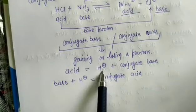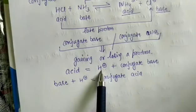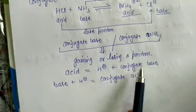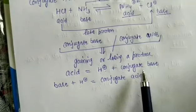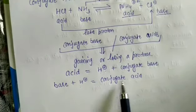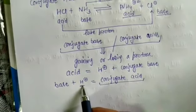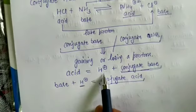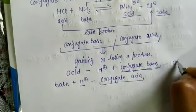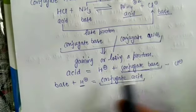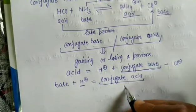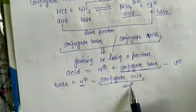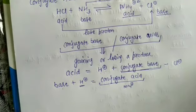The conjugate acid has one extra proton compared to the base it came from, while the conjugate base has one fewer proton than the acid it came from. For example: HCl is the acid, chloride is the conjugate base (one fewer proton). Ammonia is the base, ammonium is the conjugate acid (one extra proton). This is all about the conjugate acid-base pair concept in Bronsted-Lowry theory.